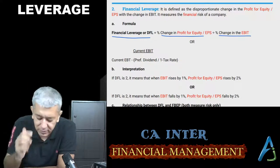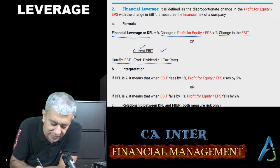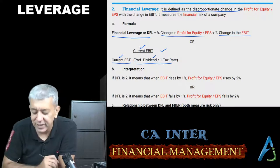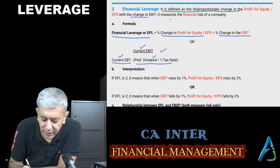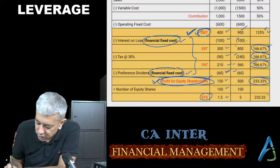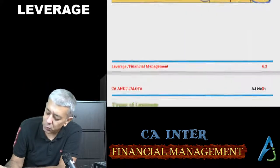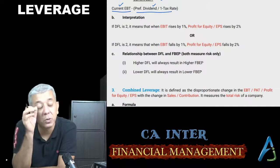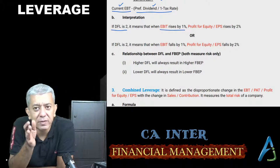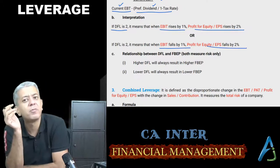Shortcut formula for DFL: current EBIT divided by (current EBT minus preference dividend divided by 1 minus tax rate). The logic: EBIT and EBT are before-tax figures, but preference dividend is after-tax, so we convert it to before-tax. Definition: DFL is a disproportionate change in profit for equity or EPS with a change in EBIT; it measures financial risk of a company. In this example: percentage change in EPS is 233.33%, divided by 125%. If DFL were 2 — whenever EBIT rises by 1%, profit for equity rises by 2%, and whenever EBIT falls by 1%, profit for equity falls by 2%.